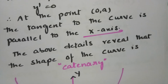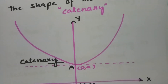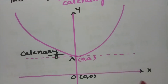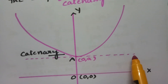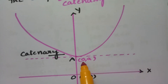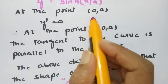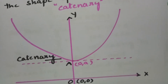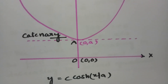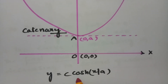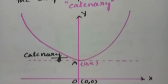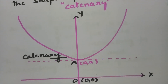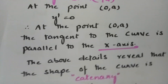The above details reveal that the shape of the curve is a catenary. The x-axis and y-axis are shown, with the tangent to the curve at (0, a) parallel to the x-axis. The origin is (0, 0) and the equation is y = a·cosh(x/a). This is the most important curve.